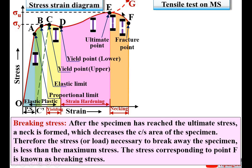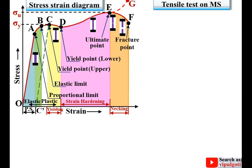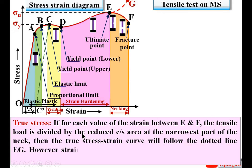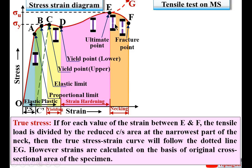The curve from E to G represents the true stress-strain curve. If for each value of strain between E and F the tensile load is divided by the reduced cross-sectional area at the narrowest part of the neck, then the true stress-strain curve follows the dotted line EG. However, stresses are usually calculated on the basis of the original cross-sectional area throughout the test, so the stress at point F is considered the fracture point.